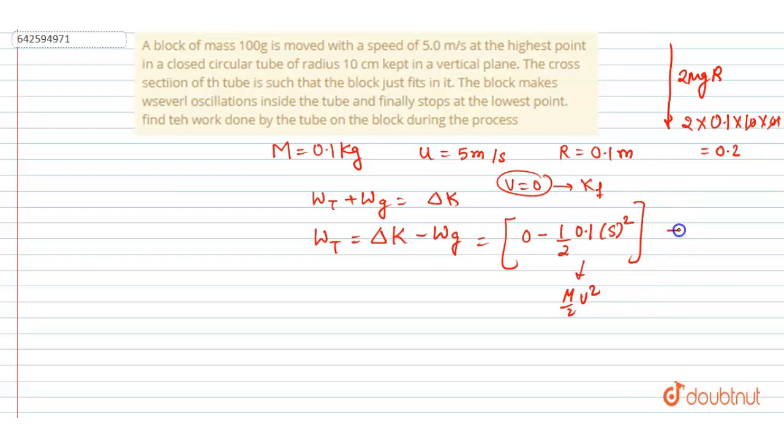So I will write the work done by gravity here, that is 0.2. So if I solve this, I will get 2.5 by 2 with a negative sign, minus 0.2. So if I solve this I will get 2.5 plus 0.4.